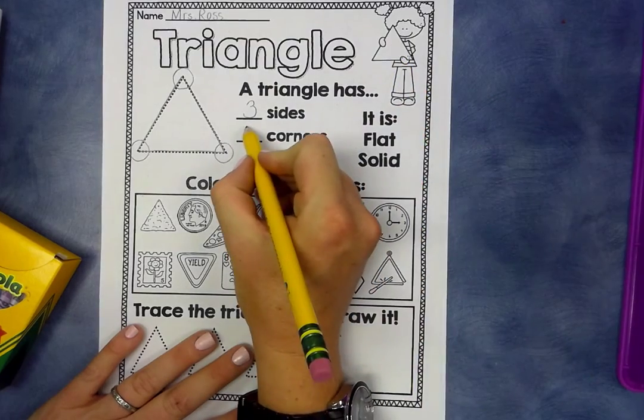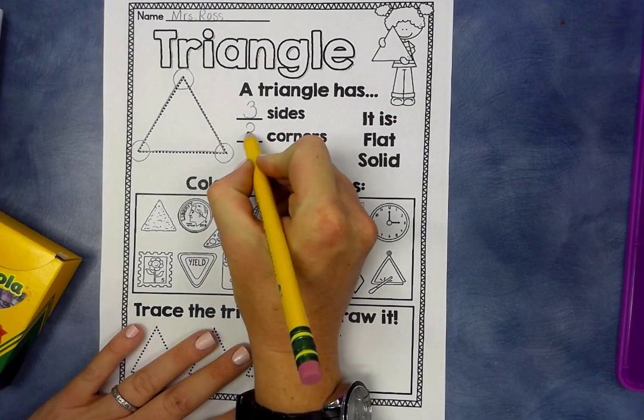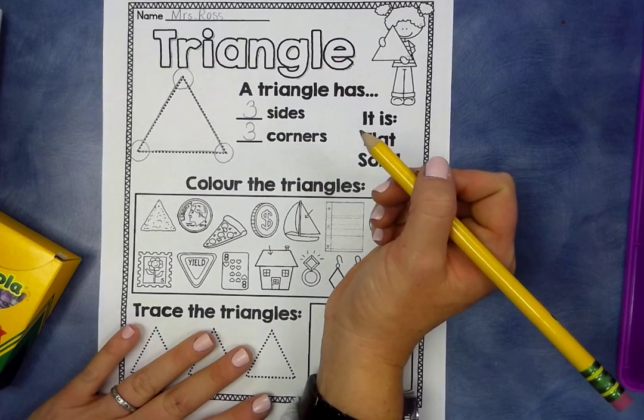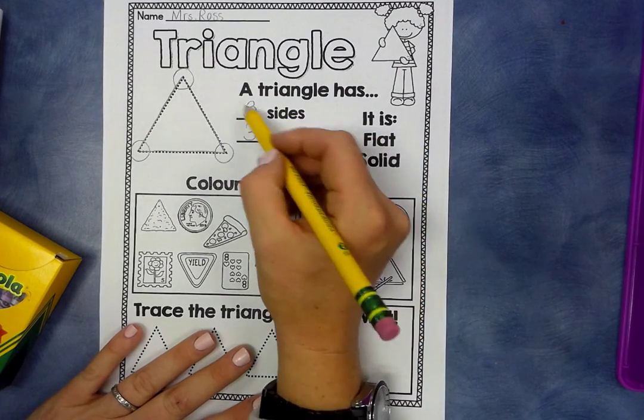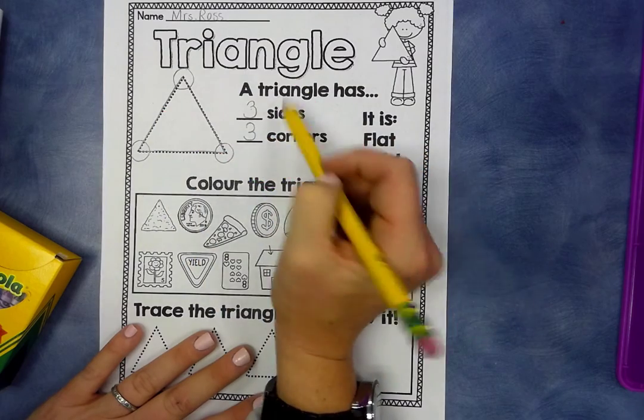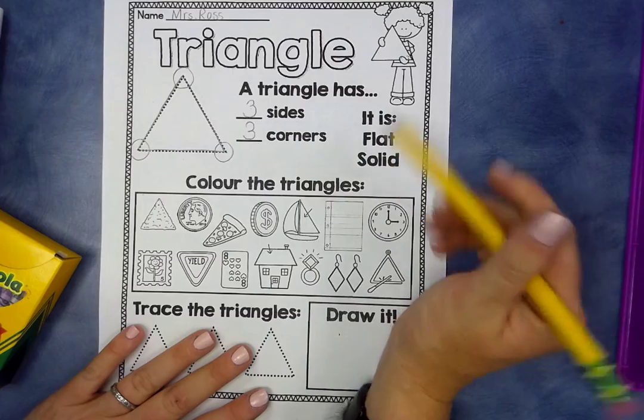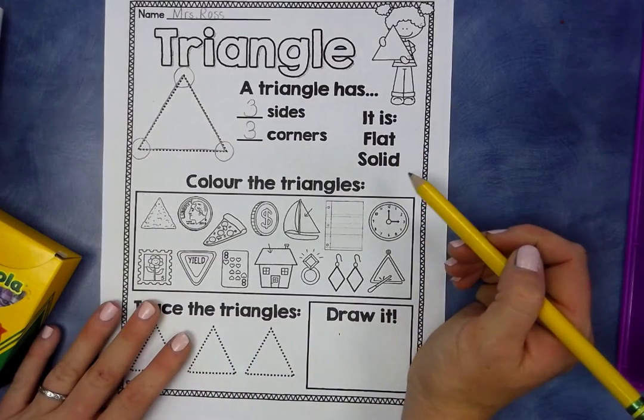So we are going to do around a tree, around a tree, that's the way we make a three. A triangle has three sides, one two three, and three corners or vertices. Ready, one two three. It is flat and solid.